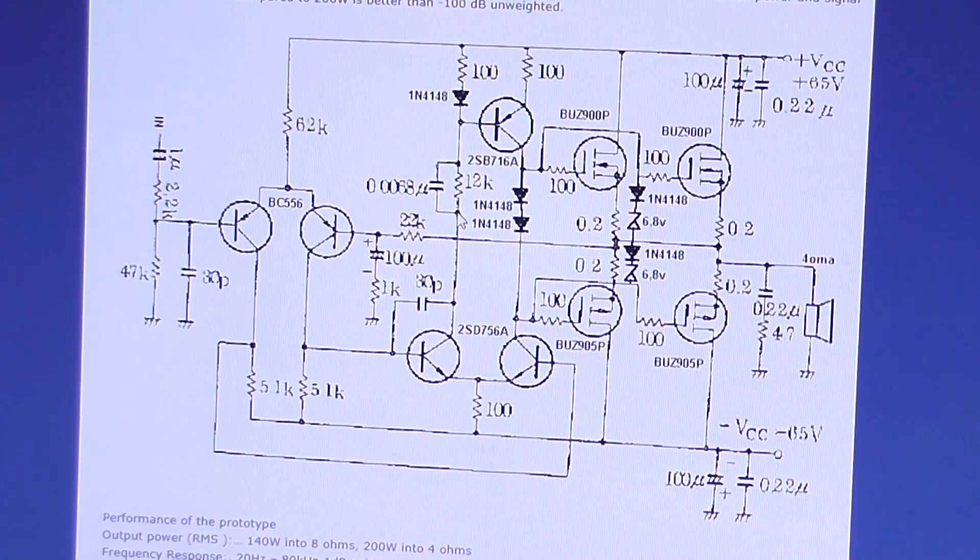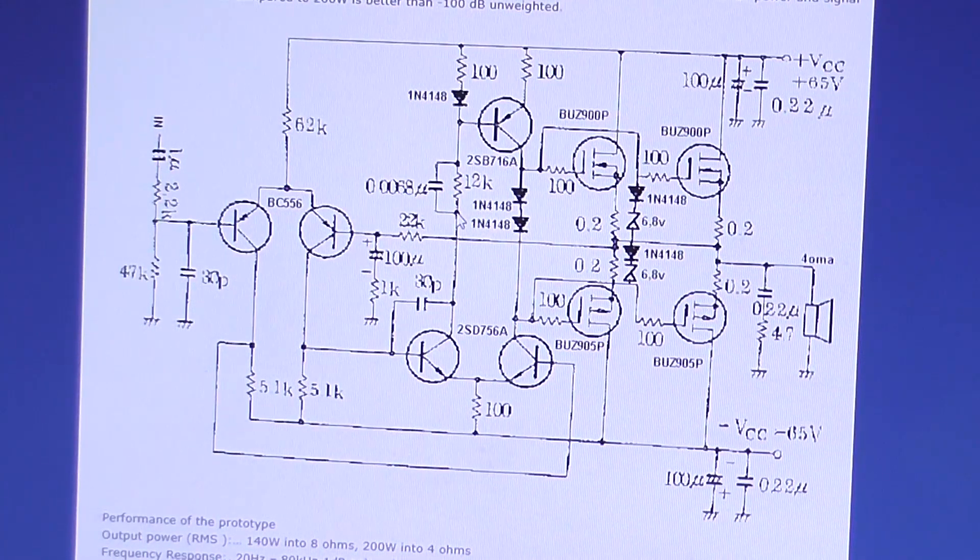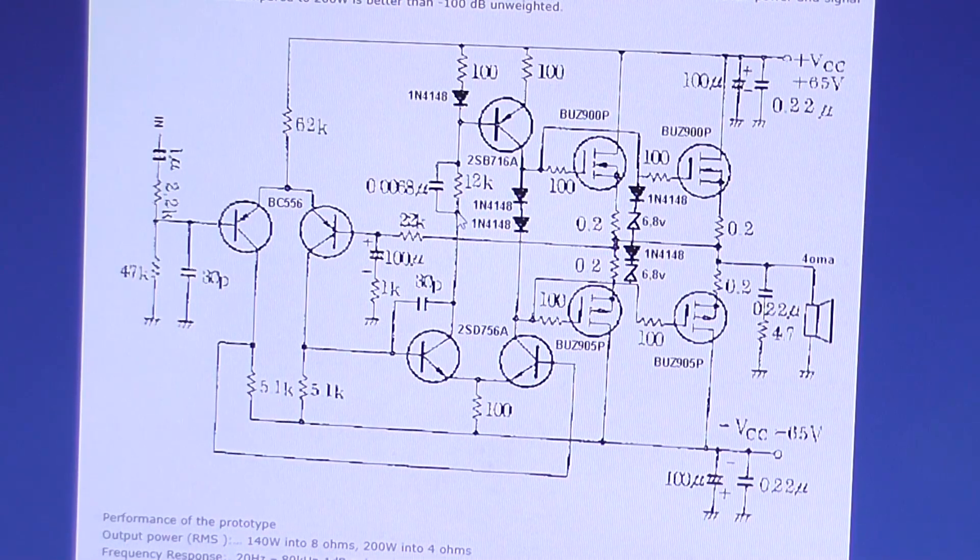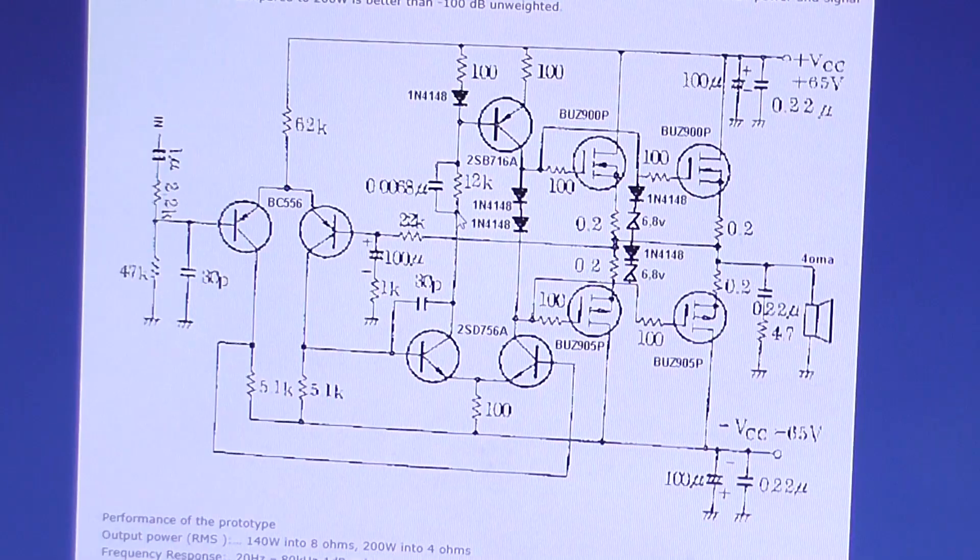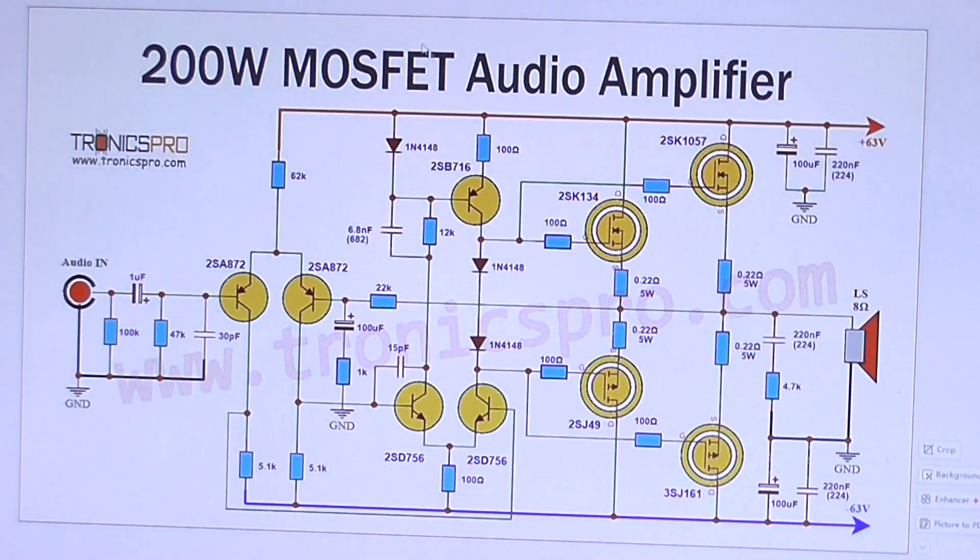However I did manage to find the original circuit that this one was stolen from. Now this circuit diagram is not really that clear but when we compare it to the original one we'll notice this 4148 diode going from the positive rail and the cathode going to the base of this 2SB716.